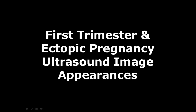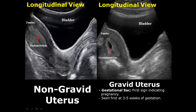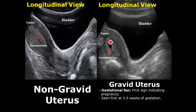Hello everyone, this is Dr. Sam. In this video we will discuss first trimester pregnancies and ectopic pregnancies. The first image is the non-gravid uterus, which means there is no pregnancy — we can see the endometrium not containing any structure. On the right side is the gravid uterus, which has a gestational sac. This gestational sac is usually visualized at three to five weeks of gestational age.